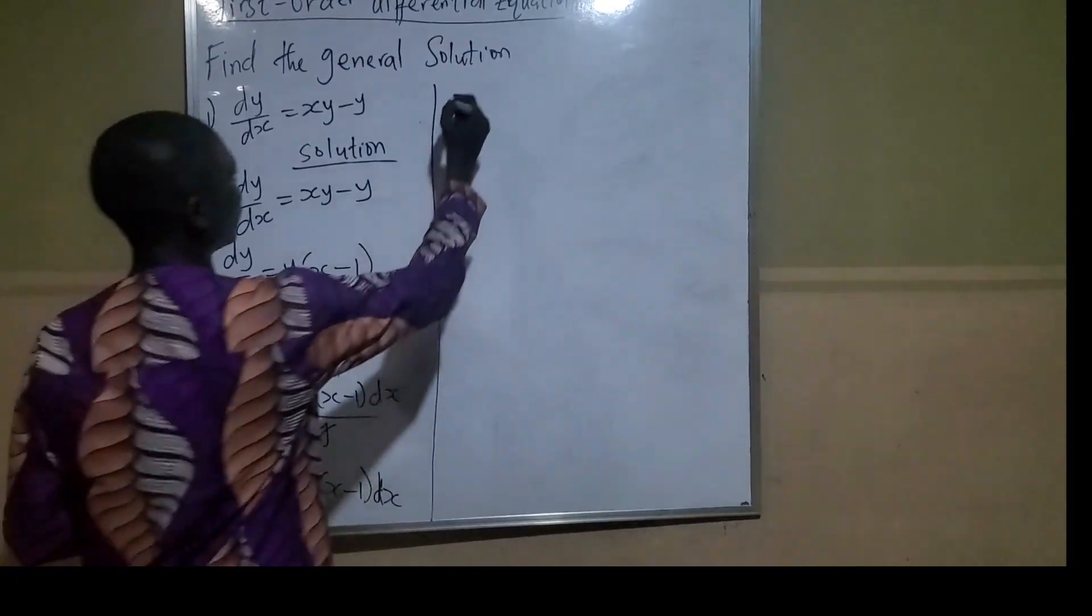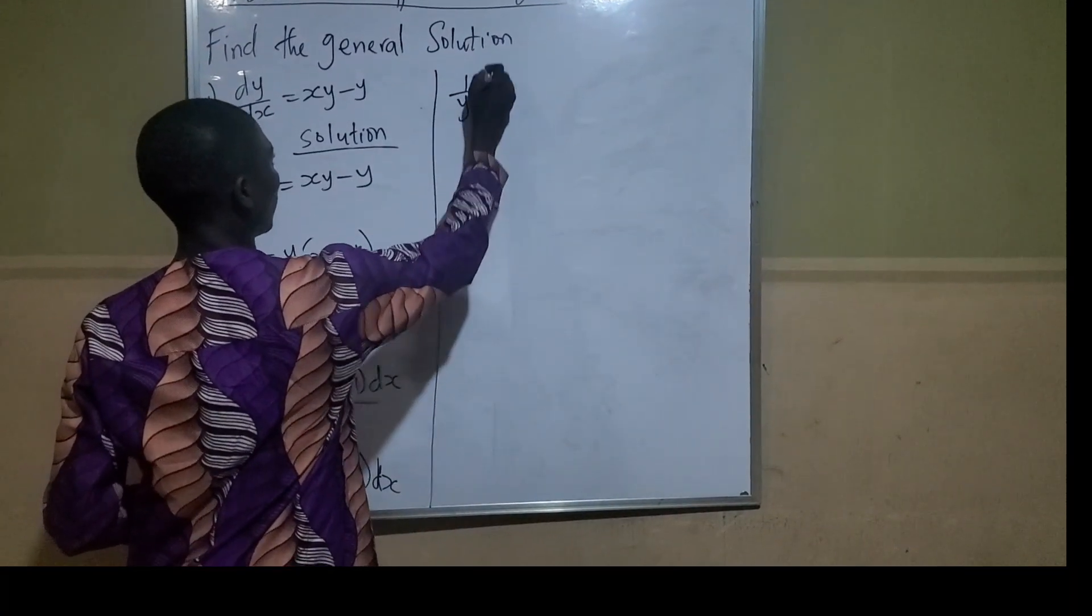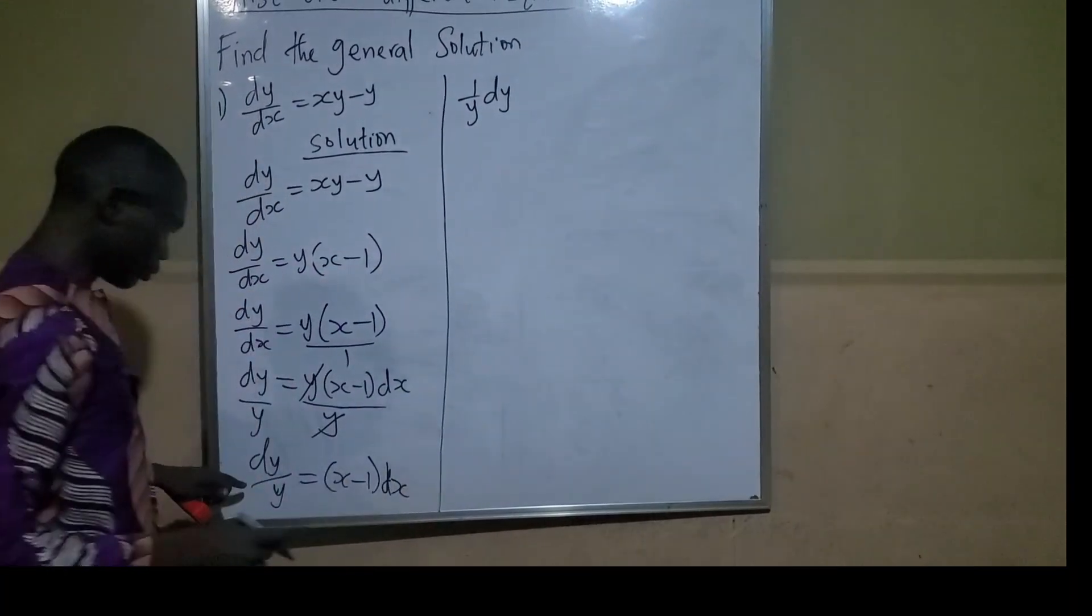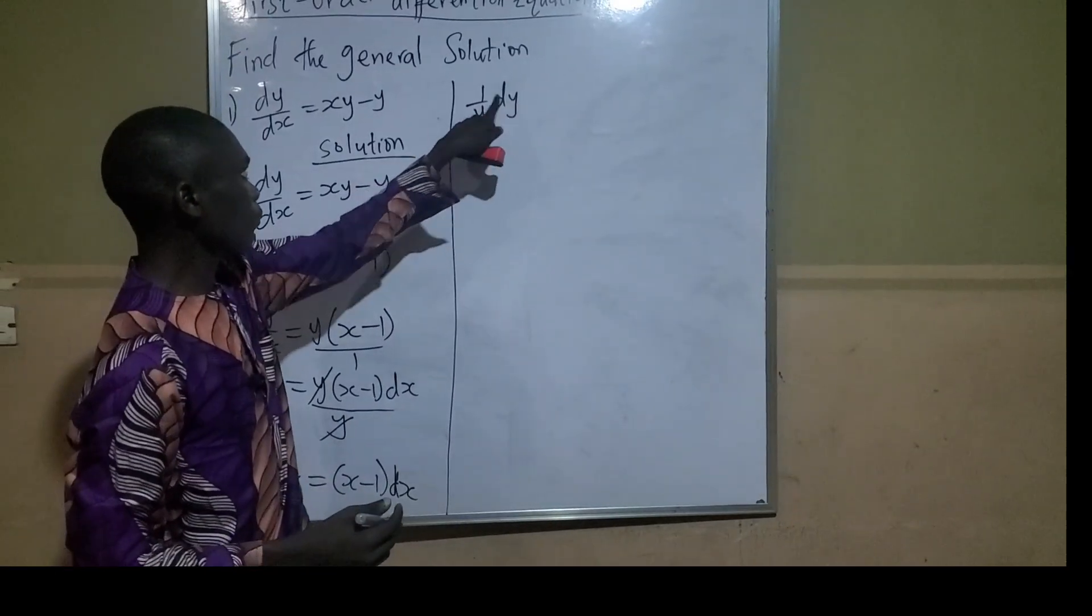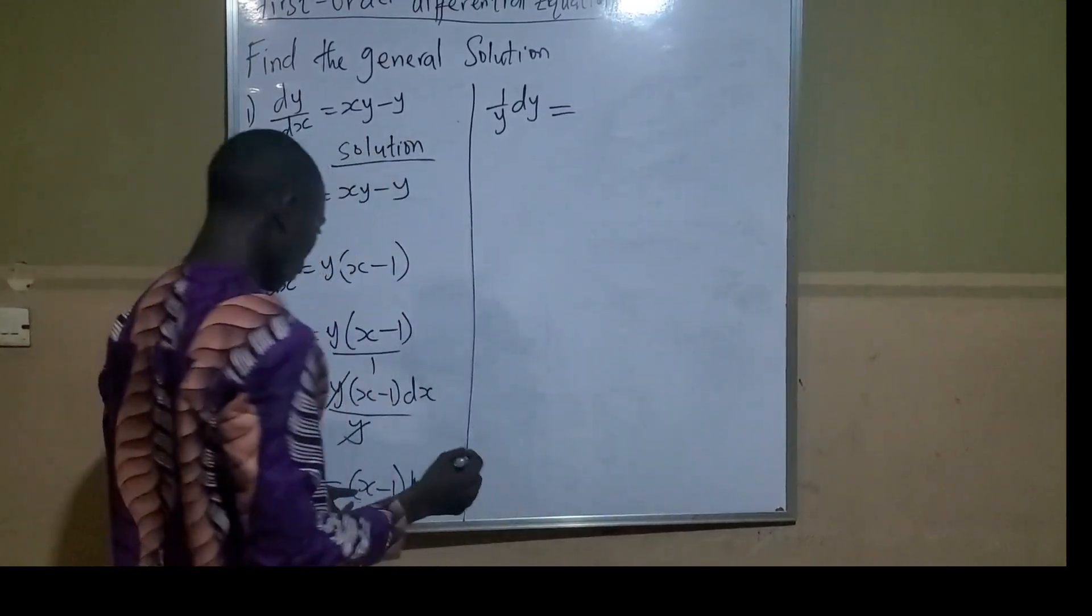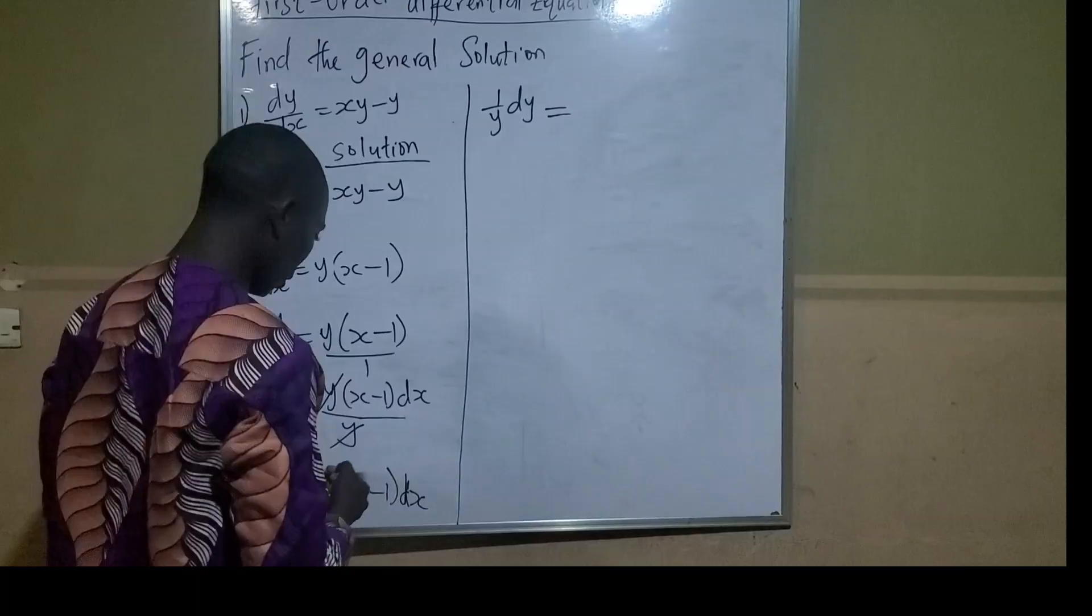I can further rewrite this as 1/y dy. Yes, 1 times dy gives dy/y, which equals (x - 1)dx.